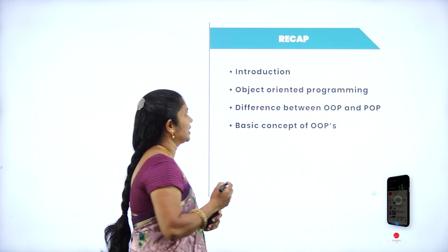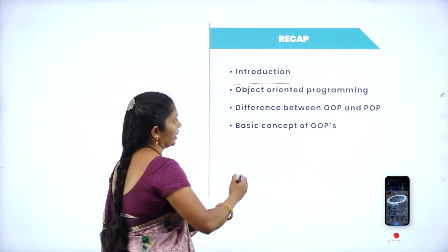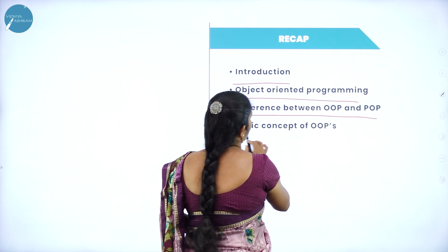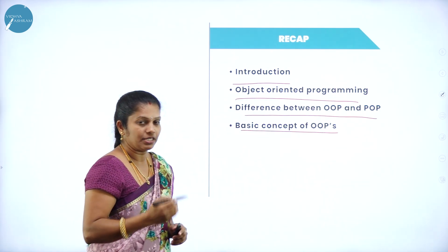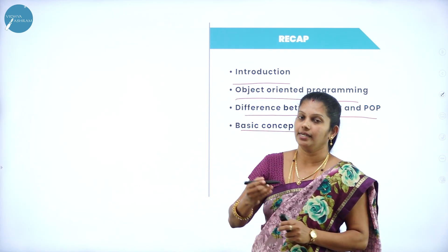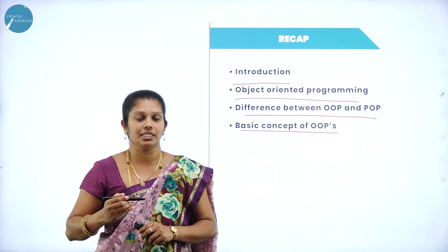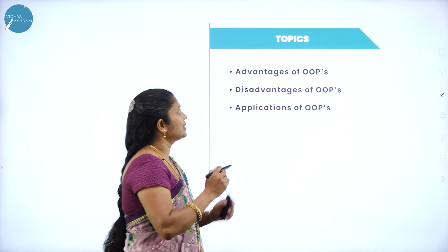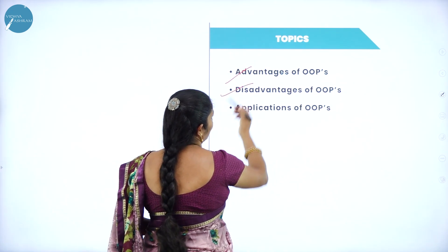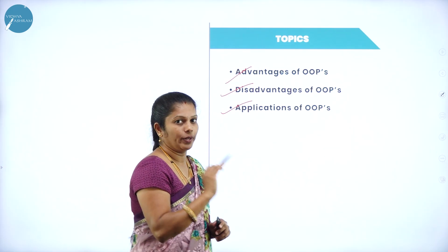You have already studied in the previous class regarding the introduction of Hoops — what is the difference between object-oriented and procedural-oriented programming, the basic concept of Hoops including what you mean by class, object, inheritance, polymorphism, encapsulation, data abstraction, and message passing. Today you will study the advantages, disadvantages, and applications of Hoops.